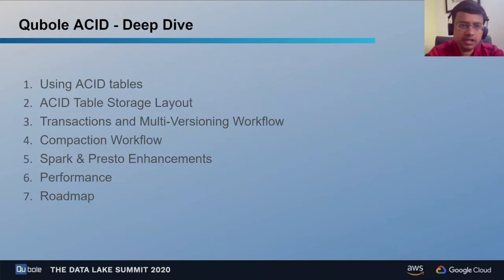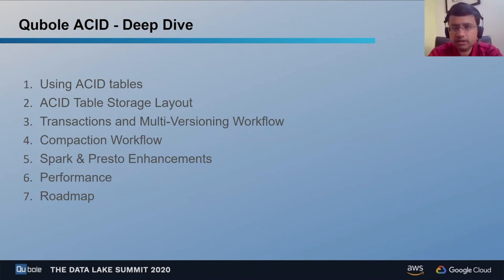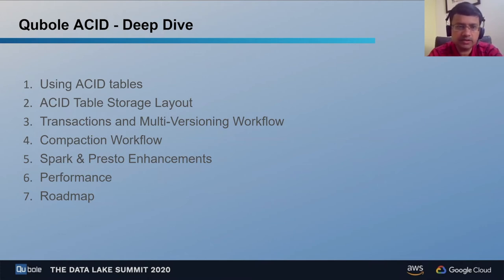The next half of this presentation will be a technical deep dive into how Qbol ACID and Hive ACID work. We'll cover how users interact with Hive ACID tables, how storage layout changes, basics of transactions and multi-versioning for concurrent readers and writers, how compactions work, what changes we've made to Spark and Presto, and some performance notes and next steps.